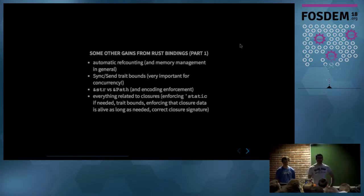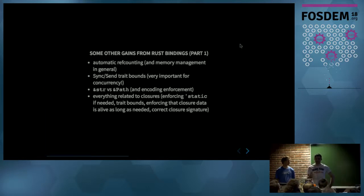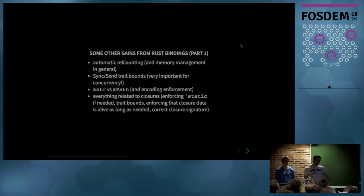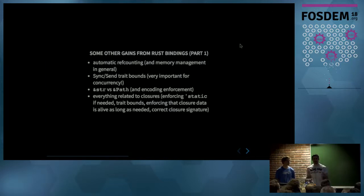Some other gains — quite a lot brought by Rust directly. Automatic reference counting and memory management brought by the Rust compiler. The Send and Sync bounds, which are used for signals, for example. This ensures your object won't be destroyed and called after being destroyed. We also enforce, when we generate the API, that if you want a string path — very convenient when you have to open a file or specify a title — you're sure you won't try to do something strange.